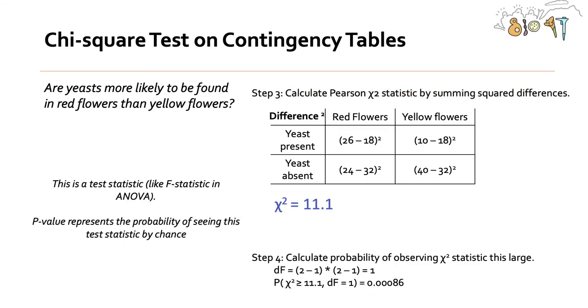So what does 11.1 mean? Well, step four is to calculate the probability of observing this chi-square statistic of this size. So kind of like we have an F statistic in ANOVA, we get a test statistic of chi-square that we can use, we can get a p-value for, which represents the probability of seeing this test statistic by chance.